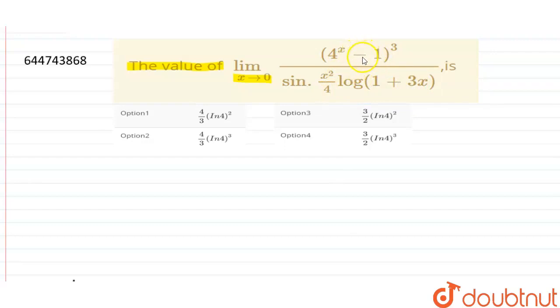we must know the basic formulas of limit. Let us write it for a to the power x minus 1. Limit x tends to 0, a to the power x minus 1 upon x is always equals to 1. Another: limit x tends to 0, sine x by x is always equals to 1. And third: limit x tends to 0, log of 1 plus x by x is always equals to 1.